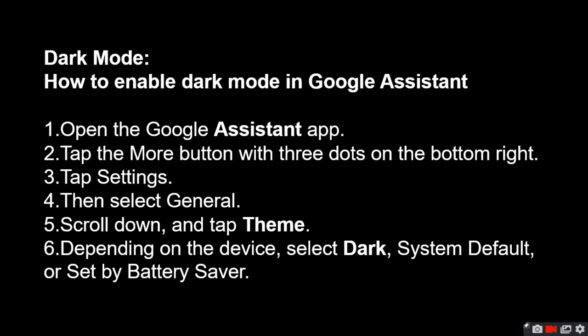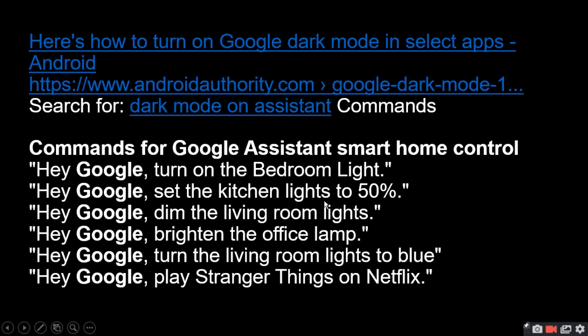Scroll down and tap on Theme. In every Android phone it may be found in a different way. Select Dark Mode or set it to System Default, or set by battery saver. With battery saver, your dark mode will be turned on.